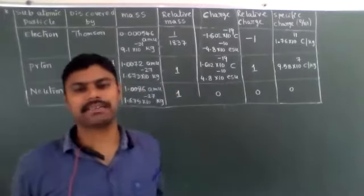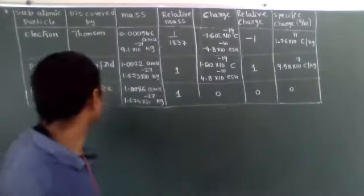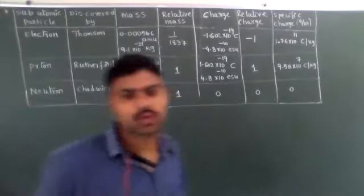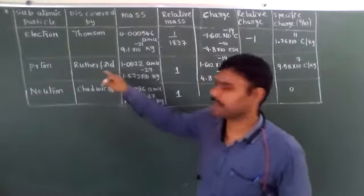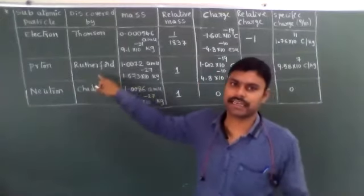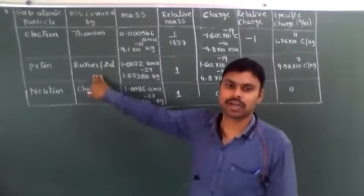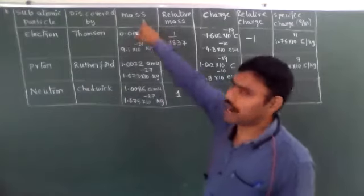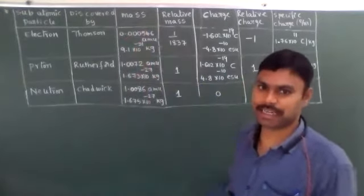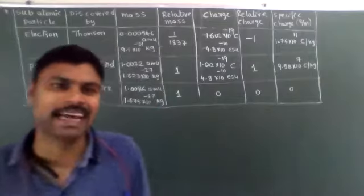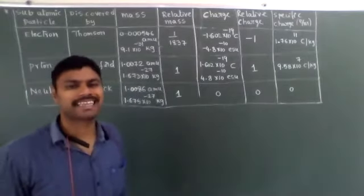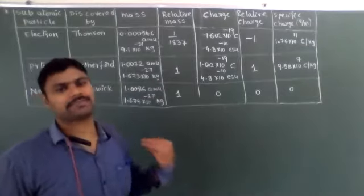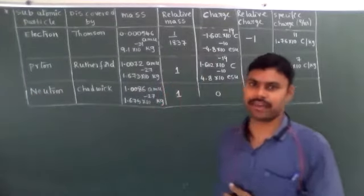In my study material, Goldstein is given as the discoverer of protons - that is wrong. The correct answer is Rutherford, not Goldstein. The absolute mass is expressed in atomic mass units AMU. The relative mass is expressed in gram atomic weights.